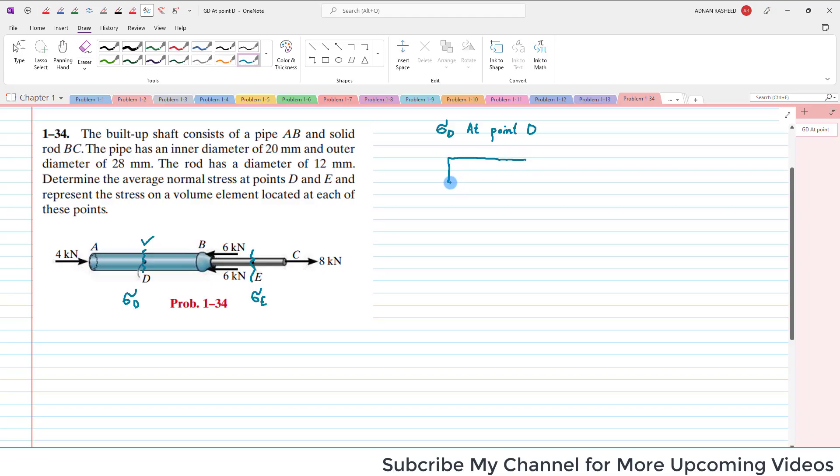So this pipe will be like this. At this edge there is 4 kilo Newtons in this direction. This is point A and this is point D.